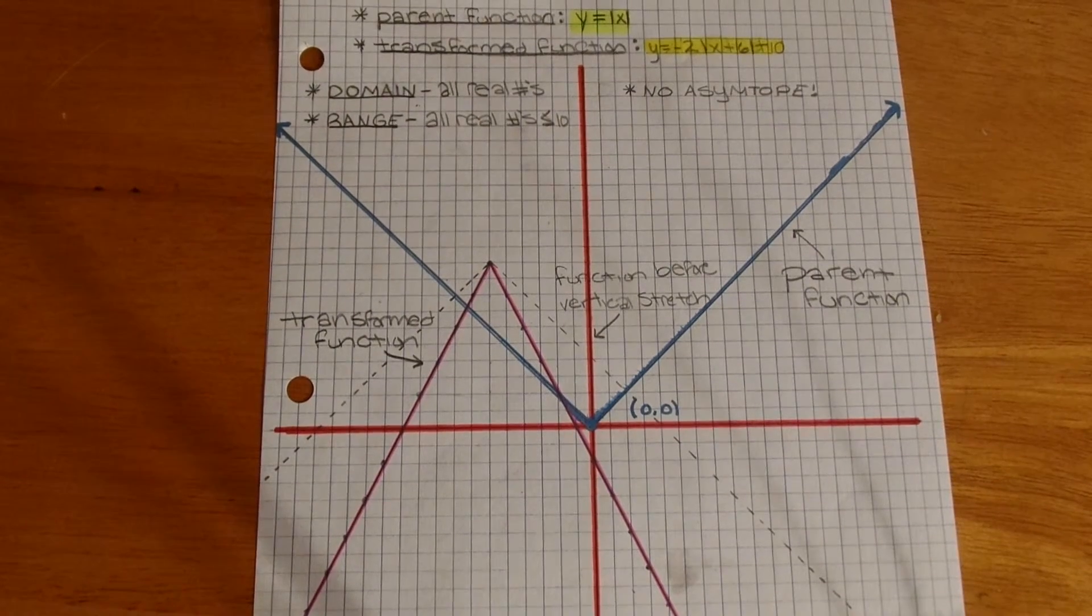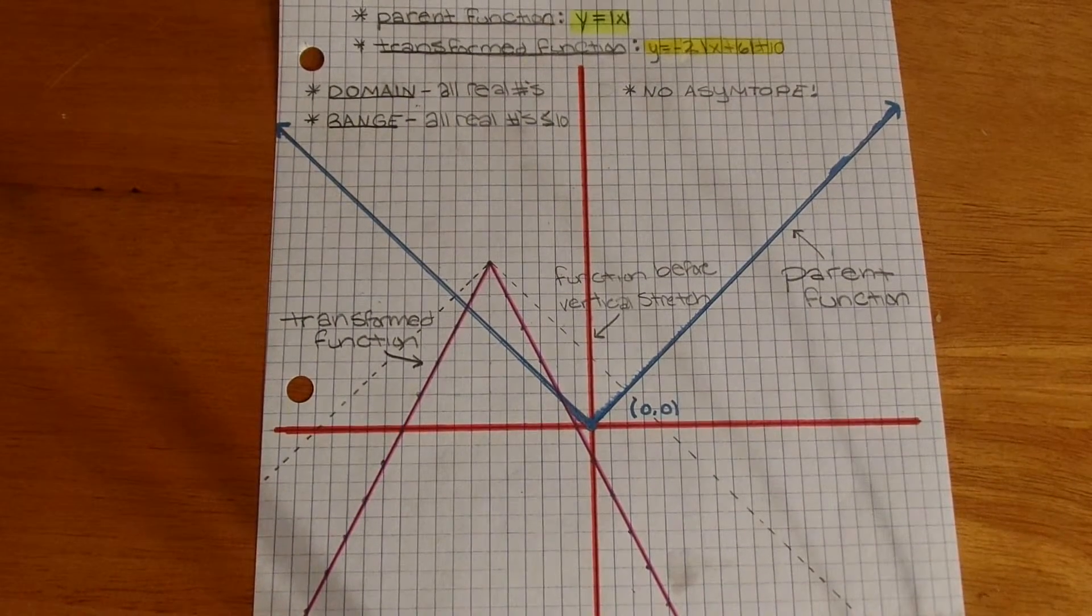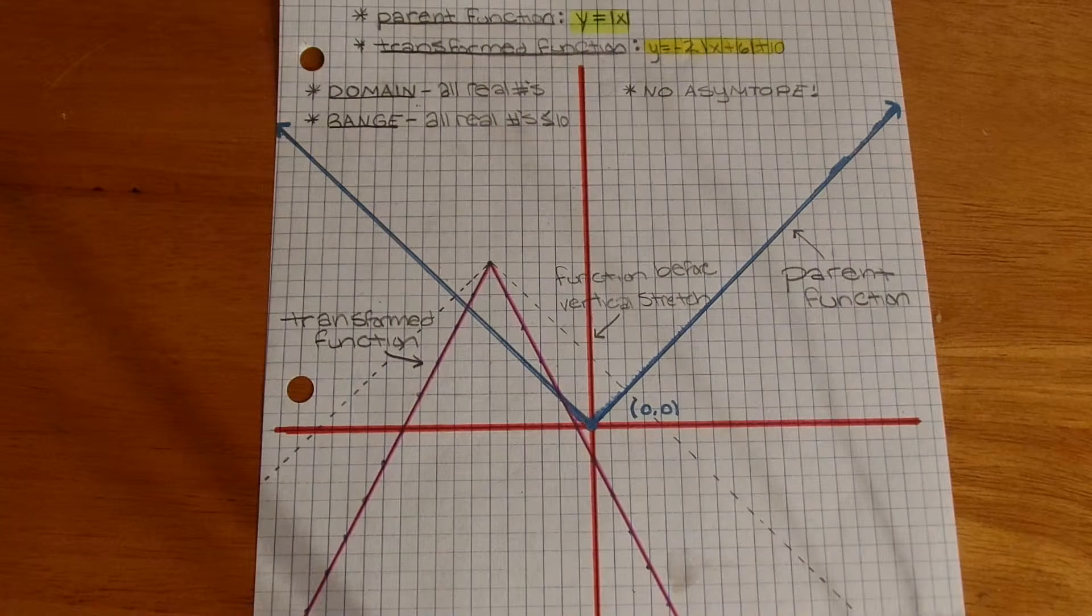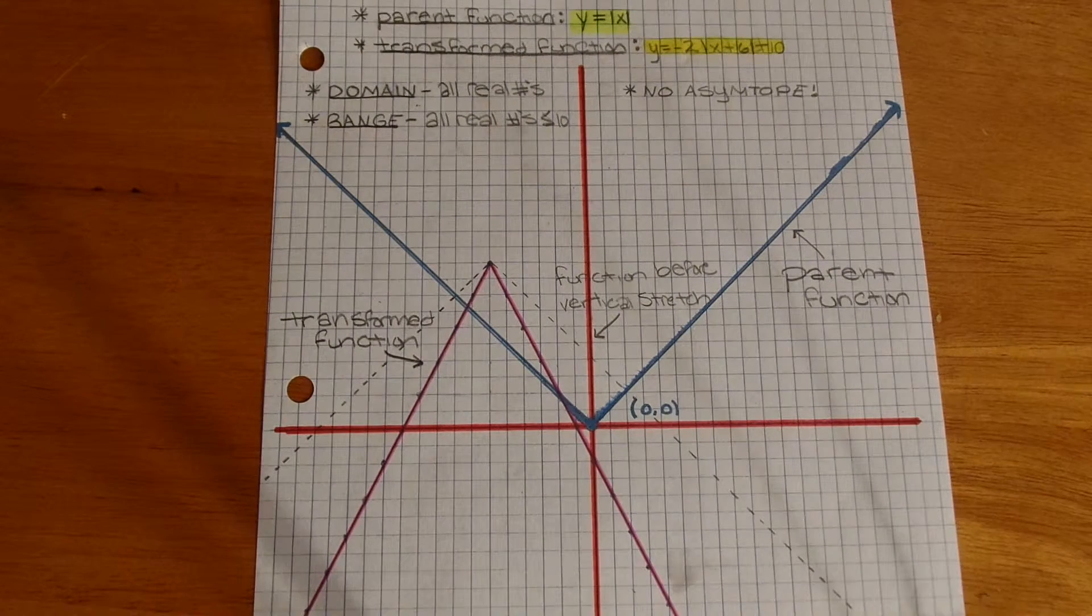Since there's also a 2 in front of the parentheses, you would have to stretch the function by 2. Basically, all this does is change the slope from 1 over 1 to 2 over 1.